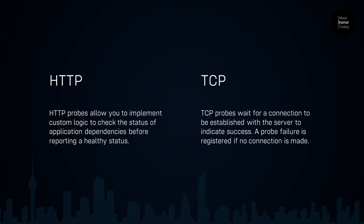There are two types of health probes based on the protocol: HTTP and TCP. HTTP probes allow you to implement custom logic to check the status of application dependencies before reporting a health status — basically, you can implement a custom HTTP endpoint to check whether you have everything ready before accepting traffic. TCP probes are a simpler approach; they wait for a connection to be established with the server to indicate success. If the connection succeeds, the Container Apps environment will assume that the container is functional.